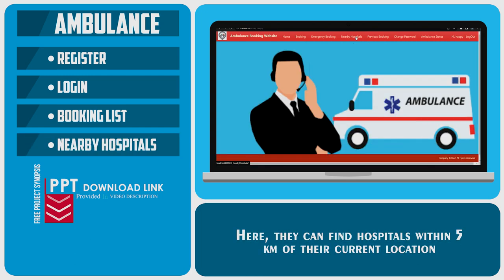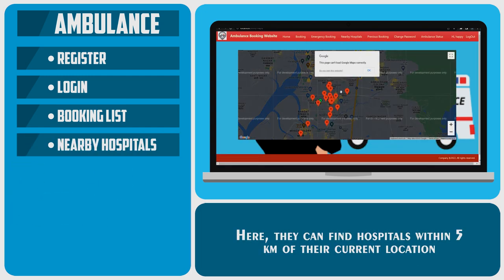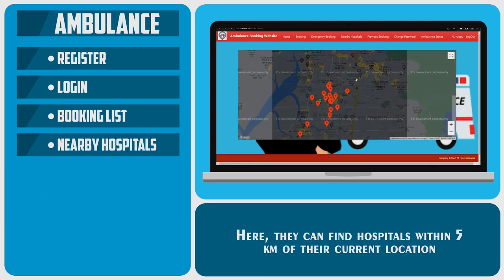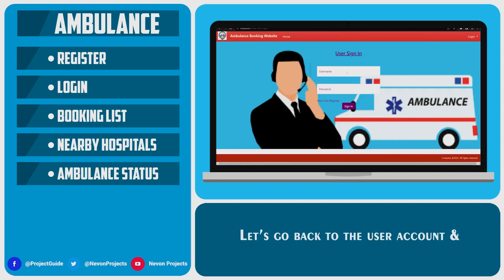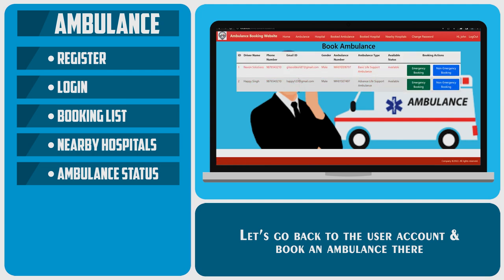Here drivers can find hospitals within 5 km of their current location. The drivers can also change the ambulance status to available or not available. Let's go back to the user account and book an ambulance there.